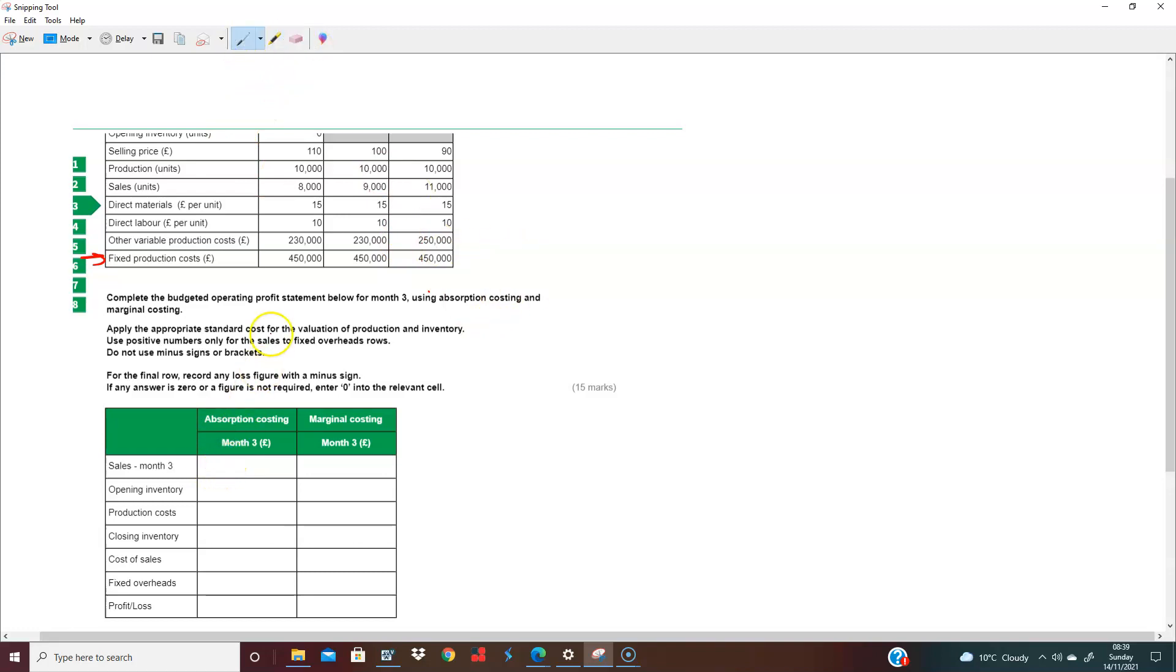So it says that you sold in month three 11,000 units. Of course, that's the same for both. So you sold 11,000 units. And you sold these 11,000 units at £90. So 11 at £90 looks like 990. That's 990,000.